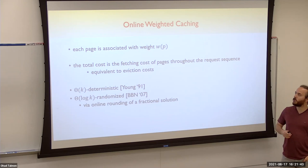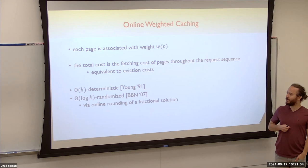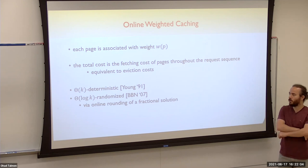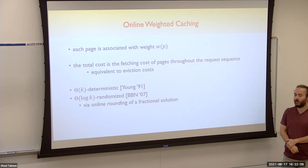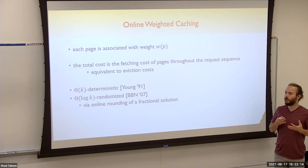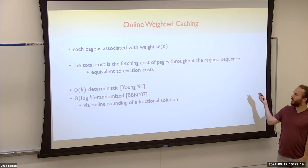Weighted caching is the same as online caching; however, each page is associated with a weight, and instead of cache misses we talk about the total fetching cost of fetching pages to the cache throughout the request sequence. Young showed that there is an order-k deterministic algorithm, and BBN showed in 2007 that there is a log-k randomized algorithm. It was also shown that the weighted version is no harder than the unweighted version.